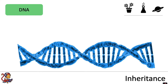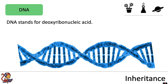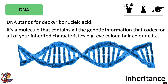So let's look in more detail about what we mean by DNA. DNA stands for deoxyribonucleic acid. It's a molecule that contains all the genetic information that codes for all of your inherited characteristics, for example your eye colour and your hair colour. Like we said, this is stored in the nucleus of the cell.